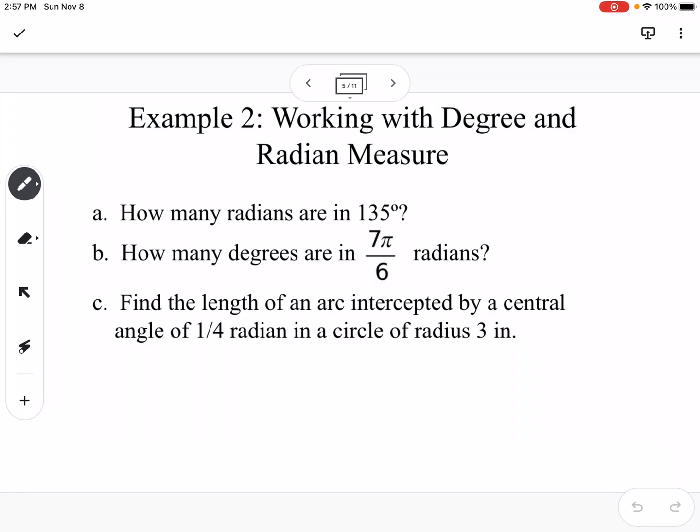So we're going to practice this. How many radians are in 135 degrees? We set this up with 135 degrees, and we're going to multiply. I can tell that I want the degrees to cancel, so that means I need to put degrees on the bottom. So that tells me the 180 goes in the bottom, and the π radians goes on the top. So the degrees cancel, so this would be 135π radians over 180, and then we simplify, so we get 3π over 4 radians.